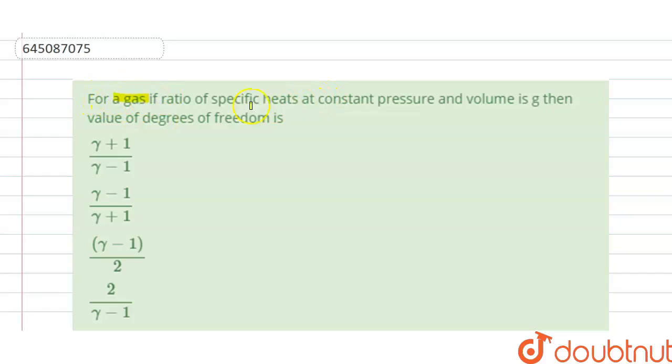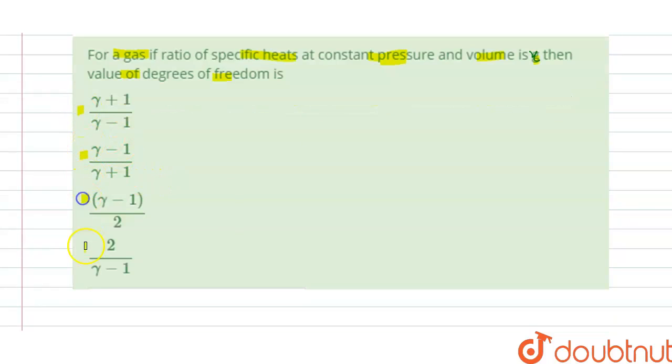For a gas, if the ratio of specific heat at constant pressure and volume is gamma, then we have to find the value of degree of freedom. We have A, B, C, D options given to us, so we have to find the correct option.